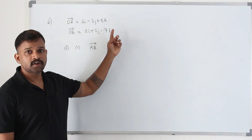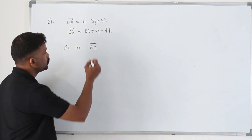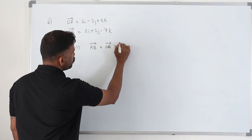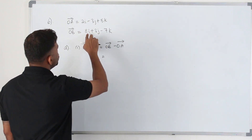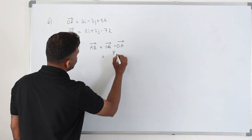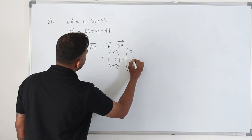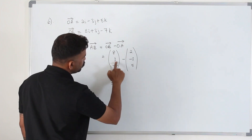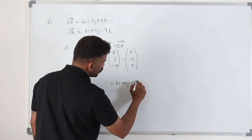We have the position vectors of A and B. Whenever the question says position vector, take it as OA and OB. The formula to find AB vector is OB minus OA — you subtract OA from OB. So: 8 minus 2 is 6i, 3 plus 3 is 6j, and minus 7 minus 5 is minus 12k. That's the AB vector.